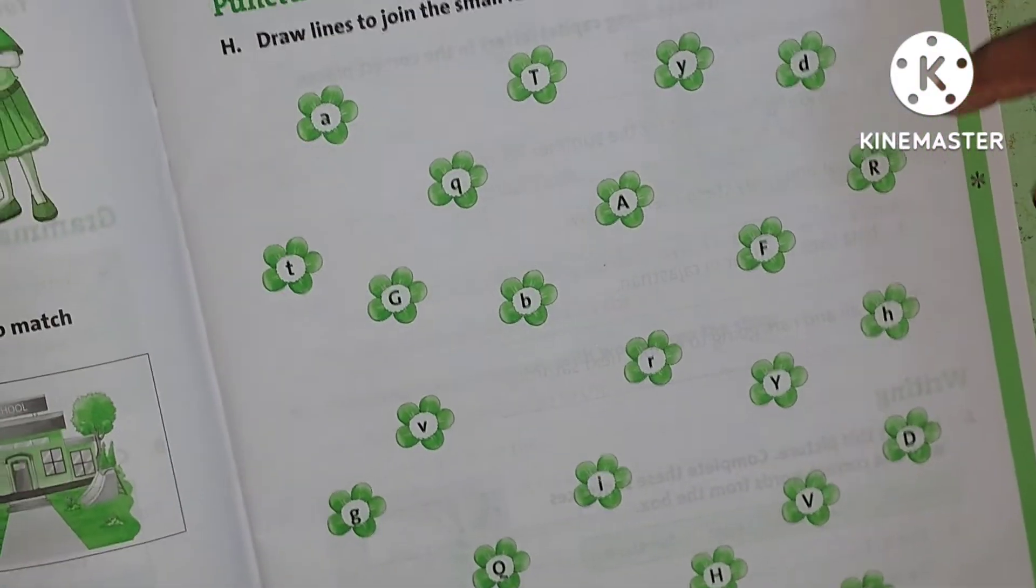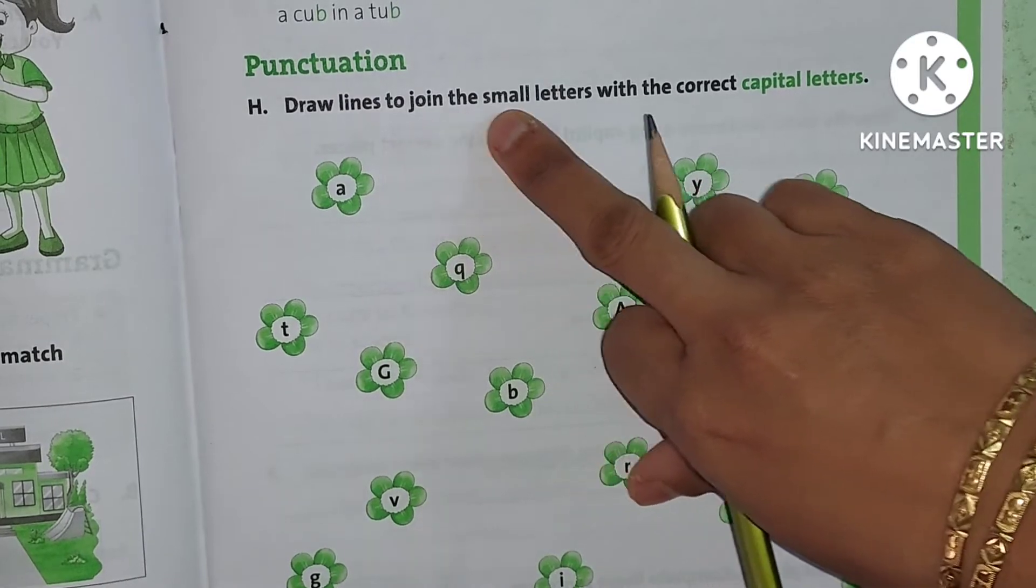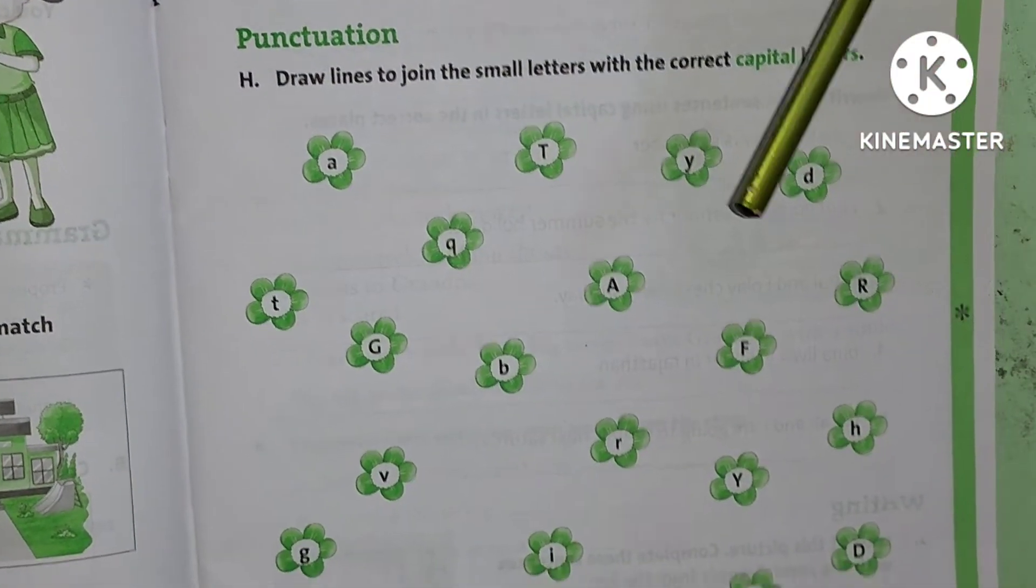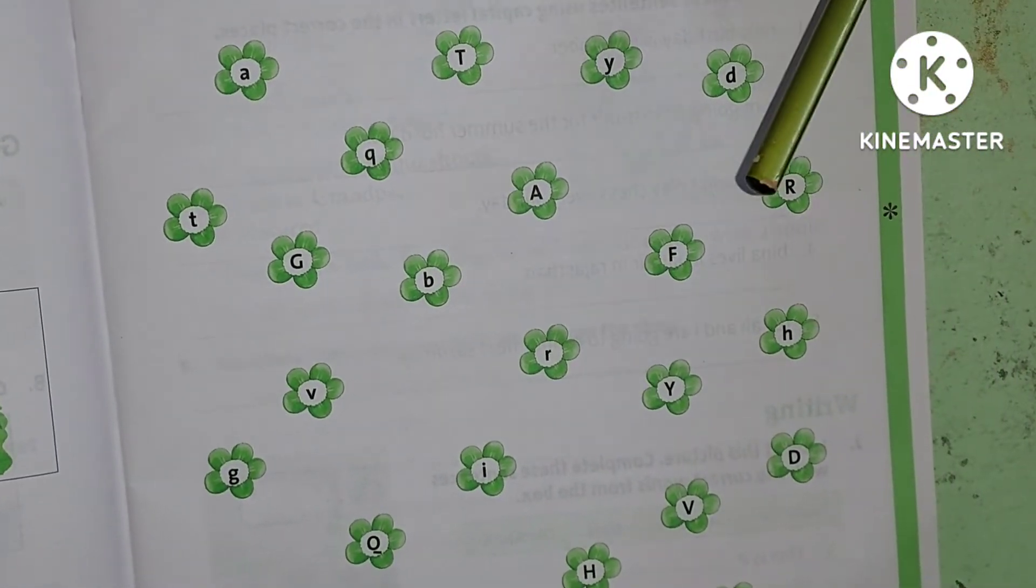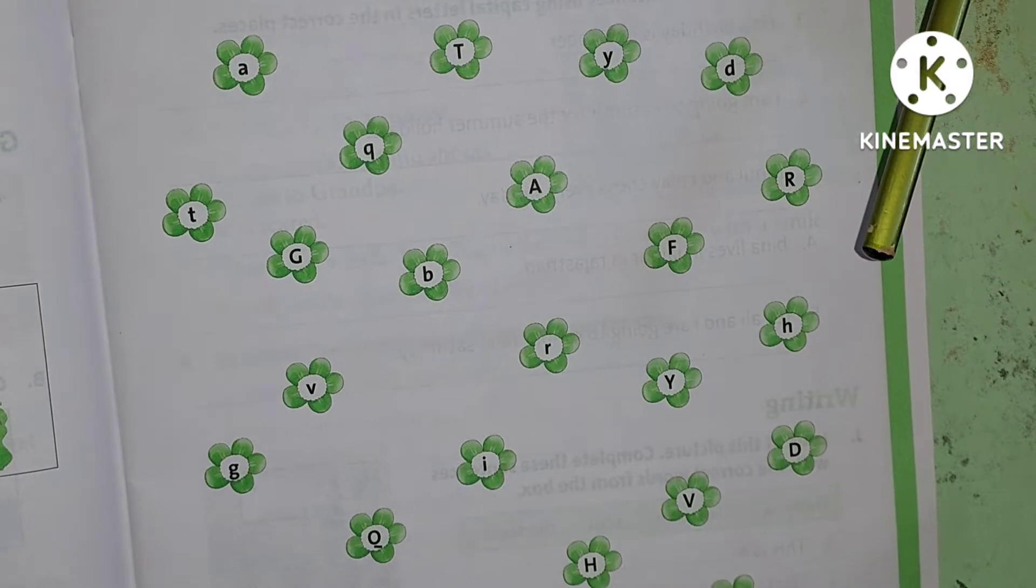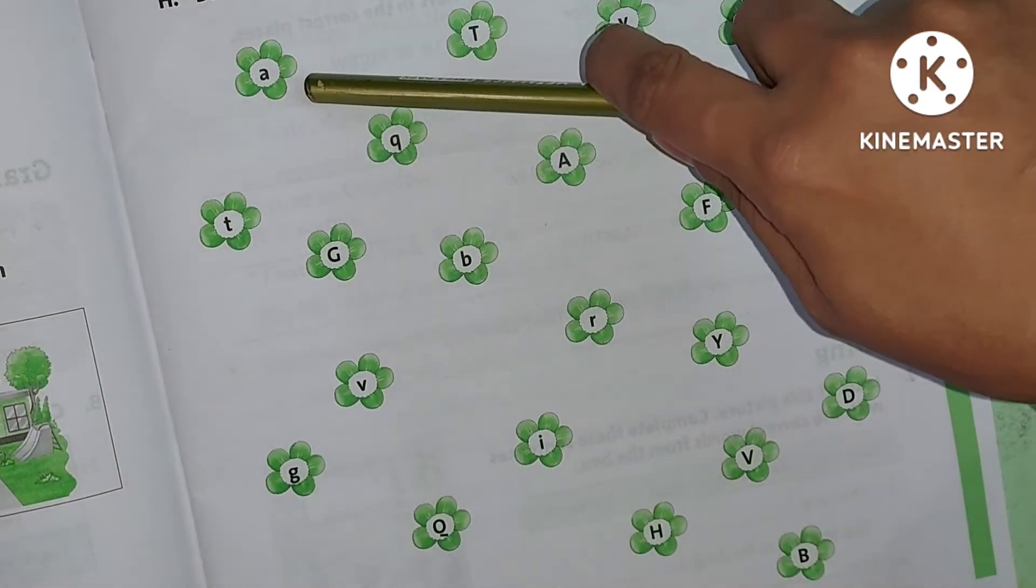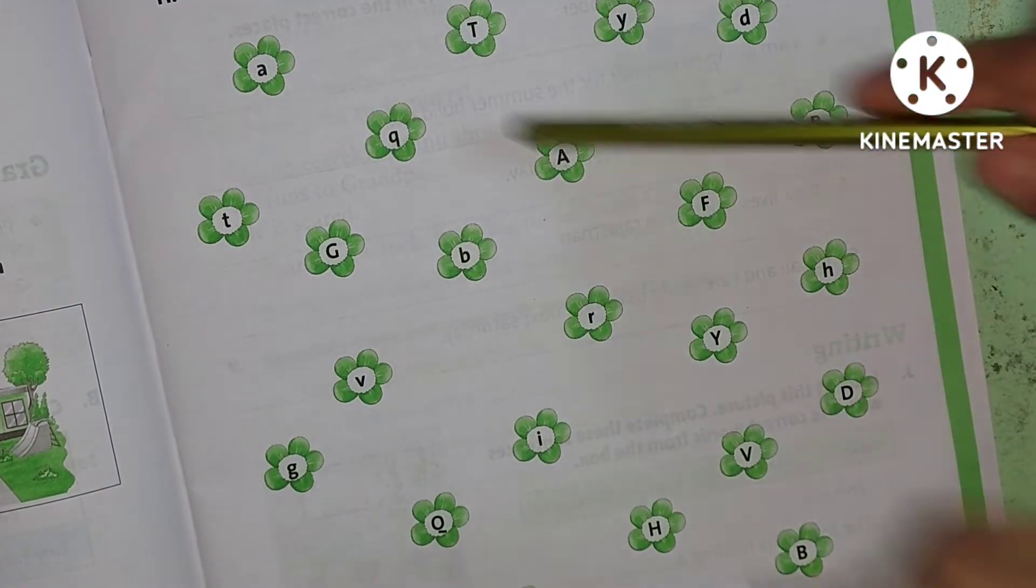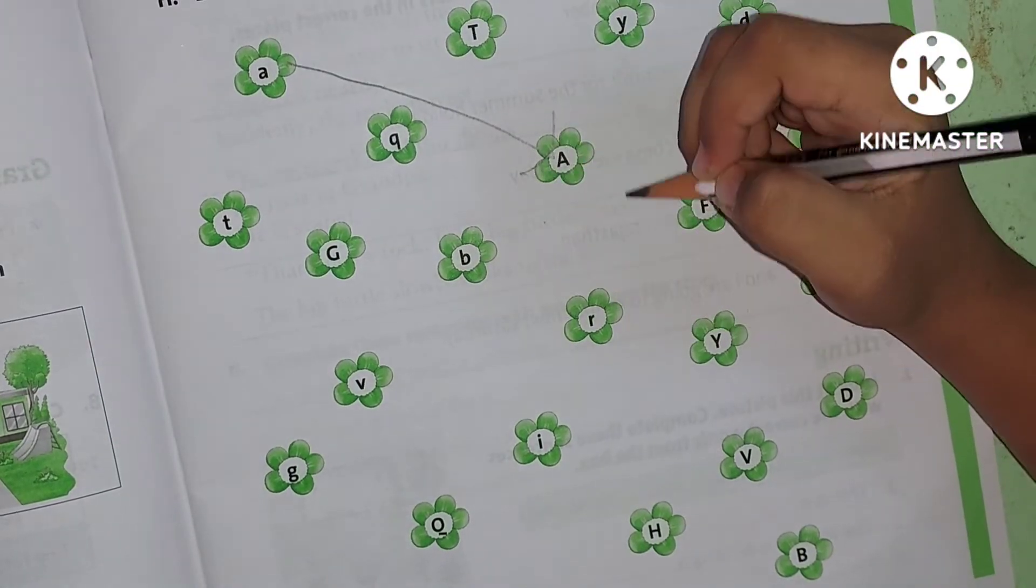Next. Shall we do this? Draw lines to join the small letters with the correct capital letters. Capital letters and small letters. Join the related small letters. Okay. Next A. First A. It is small, but big A is there. Good.